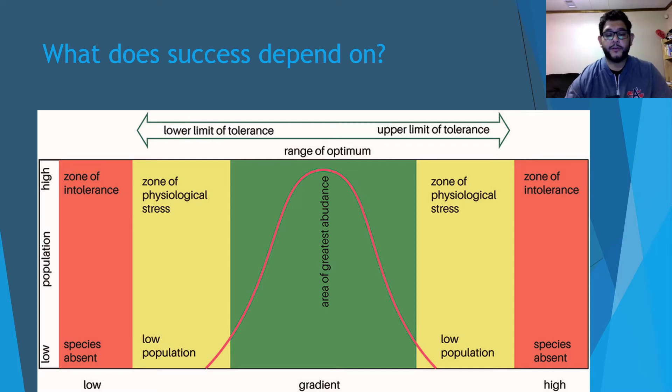You can see the corner here. The idea is you've got this diagram that shows the range of optimum. This is where species tend to do really well—they can grow, they can reproduce, they can just generally be successful.